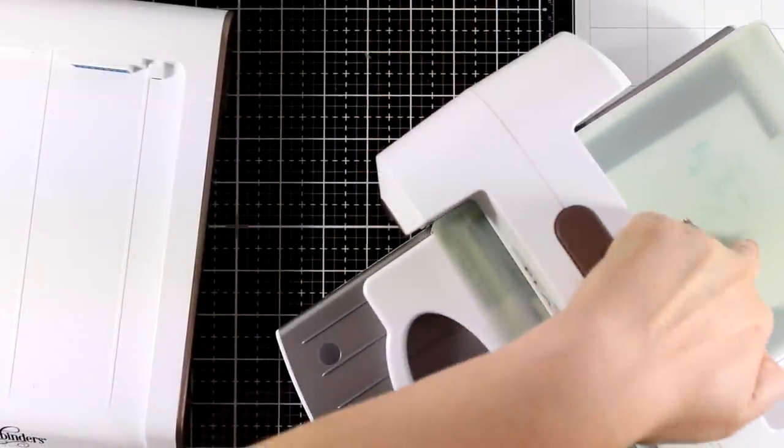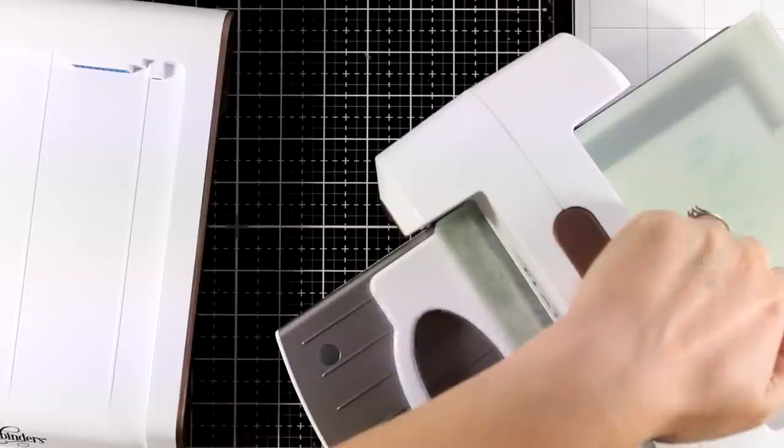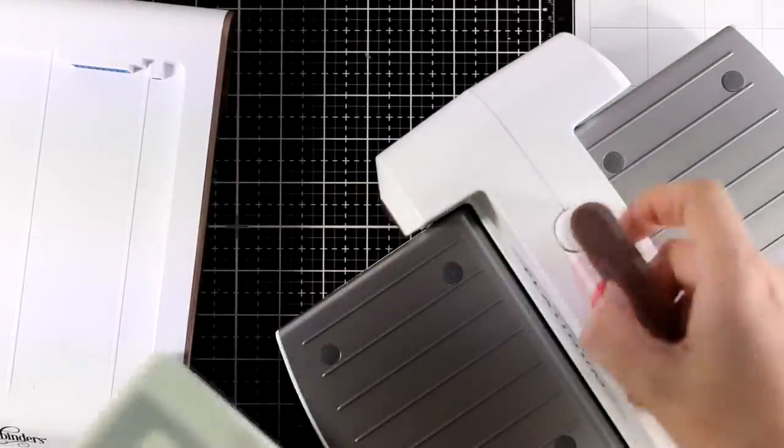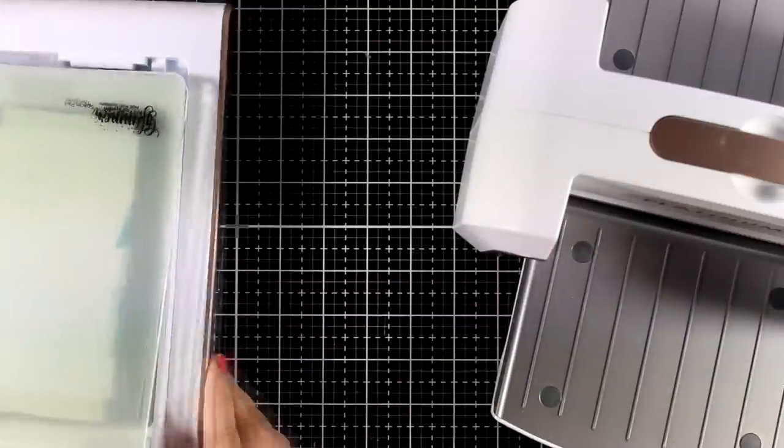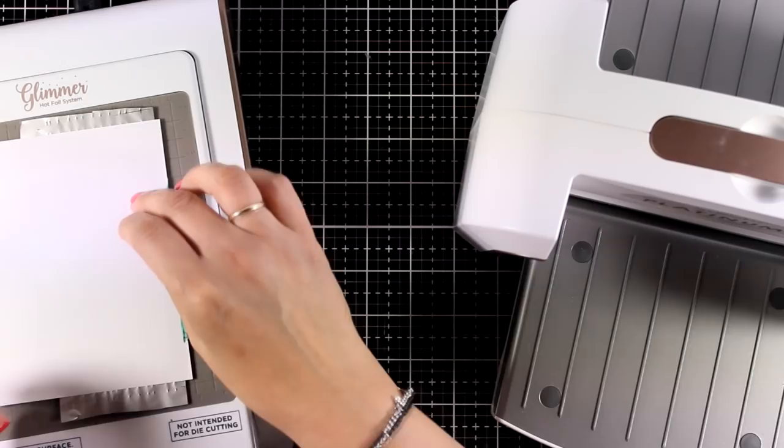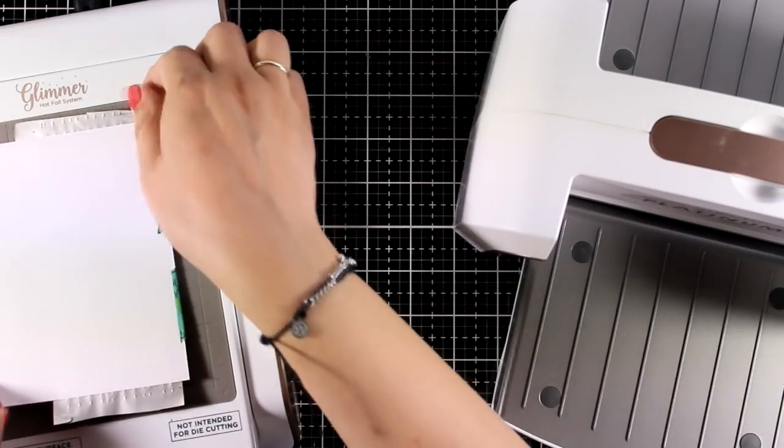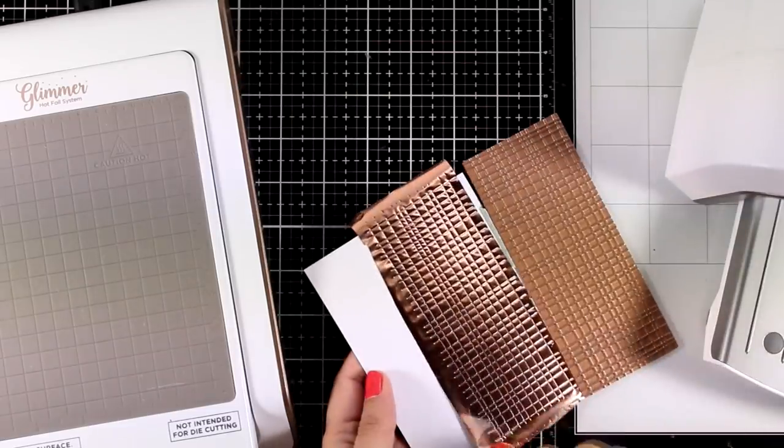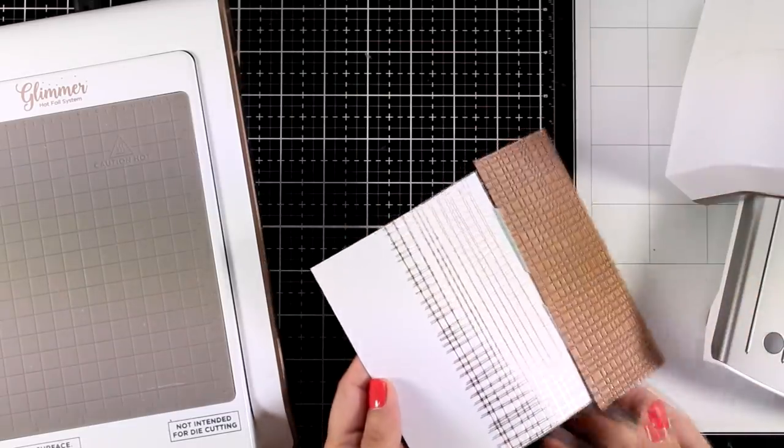I used my Glimmer hot foil machine to make sure that that plate was warm enough and then once that light stopped blinking I ran it through my die cutting machine which adds some pressure. It helps that foil to stick on top of the paper but at the same time it adds some embossing which means that it gives that lovely letterpress look.